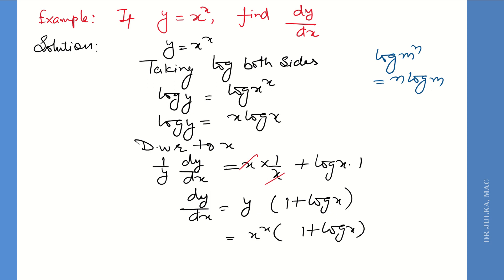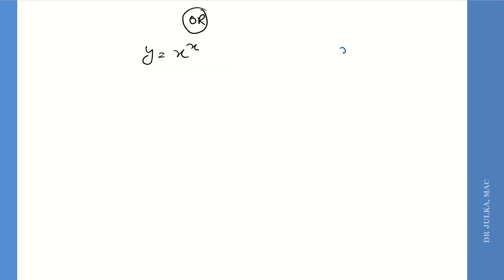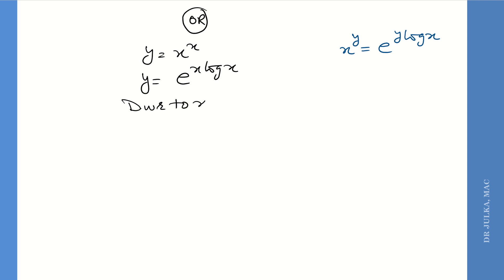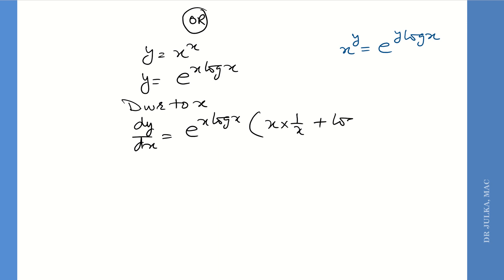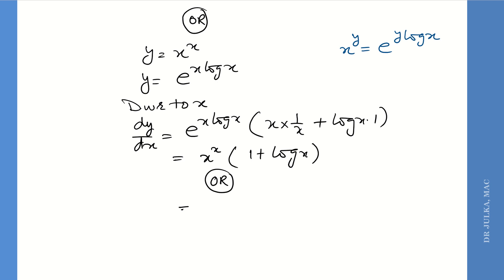Alternatively, we know that x^y equals e raised to the power y log x. So replace x^x by e raised to the power x log x. Differentiating with respect to x: dy/dx equals e^(x log x) as it is, times the derivative of x log x, which is x times derivative of log x (which is 1/x), plus log x times derivative of x (which is 1). Then replace e^(x log x) back with x^x.